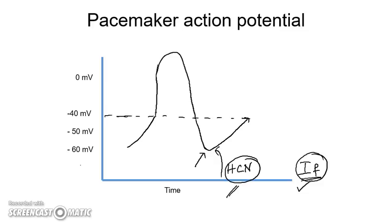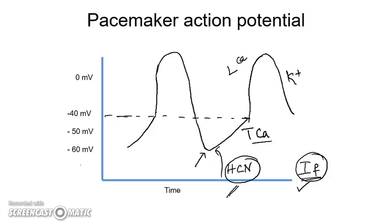The funny sodium channel current brings the membrane potential toward minus 50 millivolts. At minus 50, T-type calcium channels (transient opening calcium channels) open, bringing the membrane potential further toward minus 40 — the threshold for action potential. At minus 40, L-type calcium channels open, resulting in depolarization. Repolarization is then due to potassium ions. The cell gradually returns to minus 60, and the cycle begins again, giving pacemaker cells their rhythm-generation capacity.